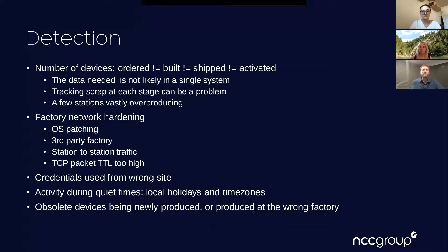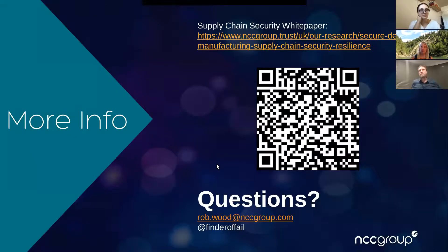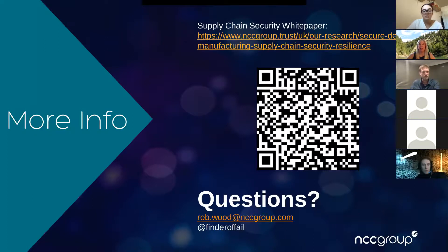These attacks go back at least a decade — something you need to be aware of. Factory network hardening is important: make sure you're not running Windows XP, systems are patched, firewalls are in place — all that standard IT security stuff needs to be pushed on your factories, especially third-party factories where you don't necessarily have control. That might need to be built into your contracts. There are lots of patterns in the data that you can spot when trying to detect this. I wrote a white paper about this a number of years ago — a link is provided. That's the end of the presentation; I'm happy to take questions.